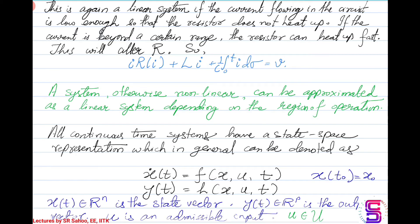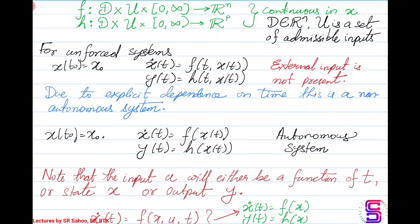All systems in general can be represented in state space as: ẋ = f(x, u, t) and y = h(x, u, t), where x(t) is the state vector in ℝⁿ, y(t) is the output vector, and u is an admissible control input. The functions f and h are mappings from the domain of states, admissible inputs, and time interval to ℝⁿ and ℝᵖ respectively, and are considered to be continuous with respect to x, where D is a subset of ℝⁿ.